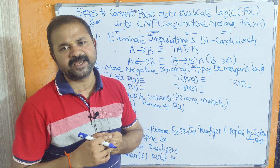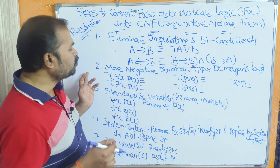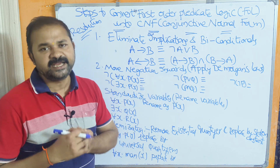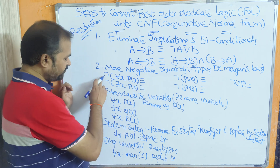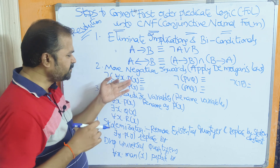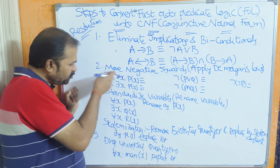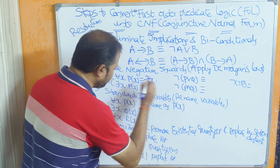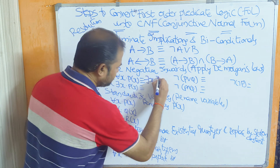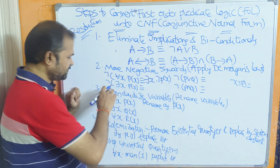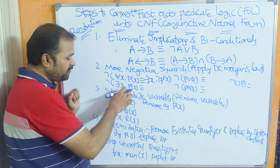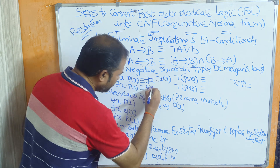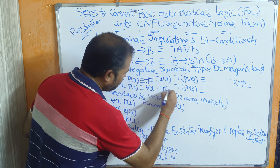Step two: move the negation inwards by applying De Morgan's laws. First, negation of for all x P(x) becomes there exists x and negation P(x). Next, negation of there exists x P(x) becomes for all x negation P(x).